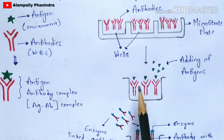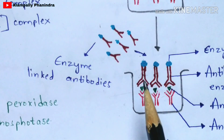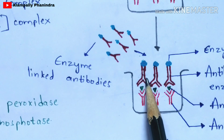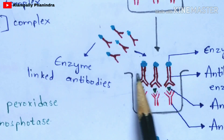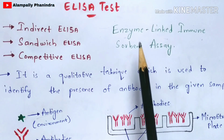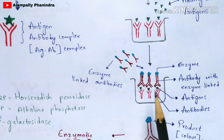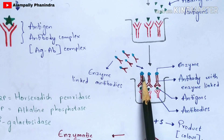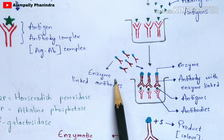In the third step, you are going to add enzyme-linked antibodies. The brown-colored structure is the antibody and the blue-colored one is the enzyme — together called an enzyme-linked antibody. This is why the test is called Enzyme-Linked Immunosorbent Assay. The antibodies used here consist of an enzyme, which is linked to them.